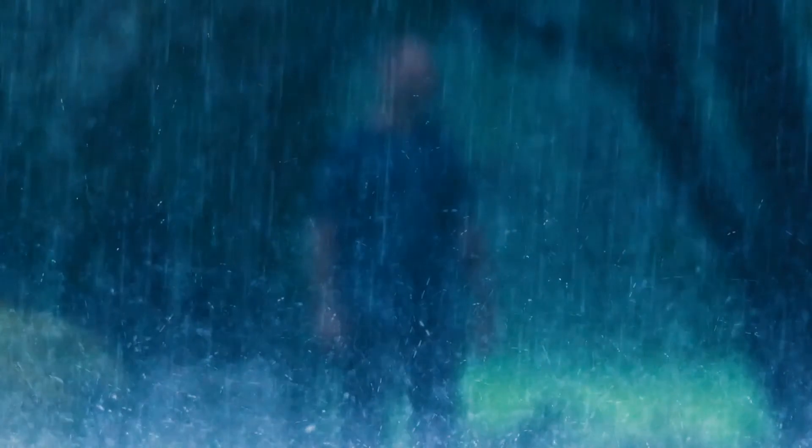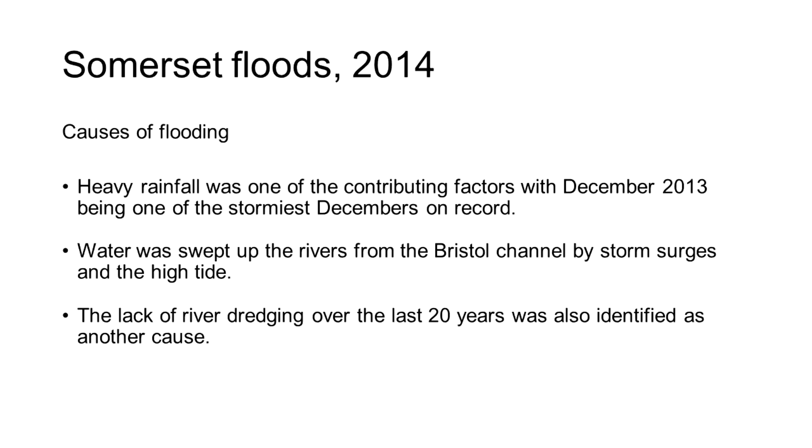For this unit you need to know a case study, so I'm going to talk about the Somerset floods from 2014. The main cause was heavy rainfall — December 2013 was one of the stormiest Decembers on record. Water was also swept up the rivers from the Bristol Channel by storm surges and high tides, while a lack of river dredging over the last 20 years was identified as another contributing cause.